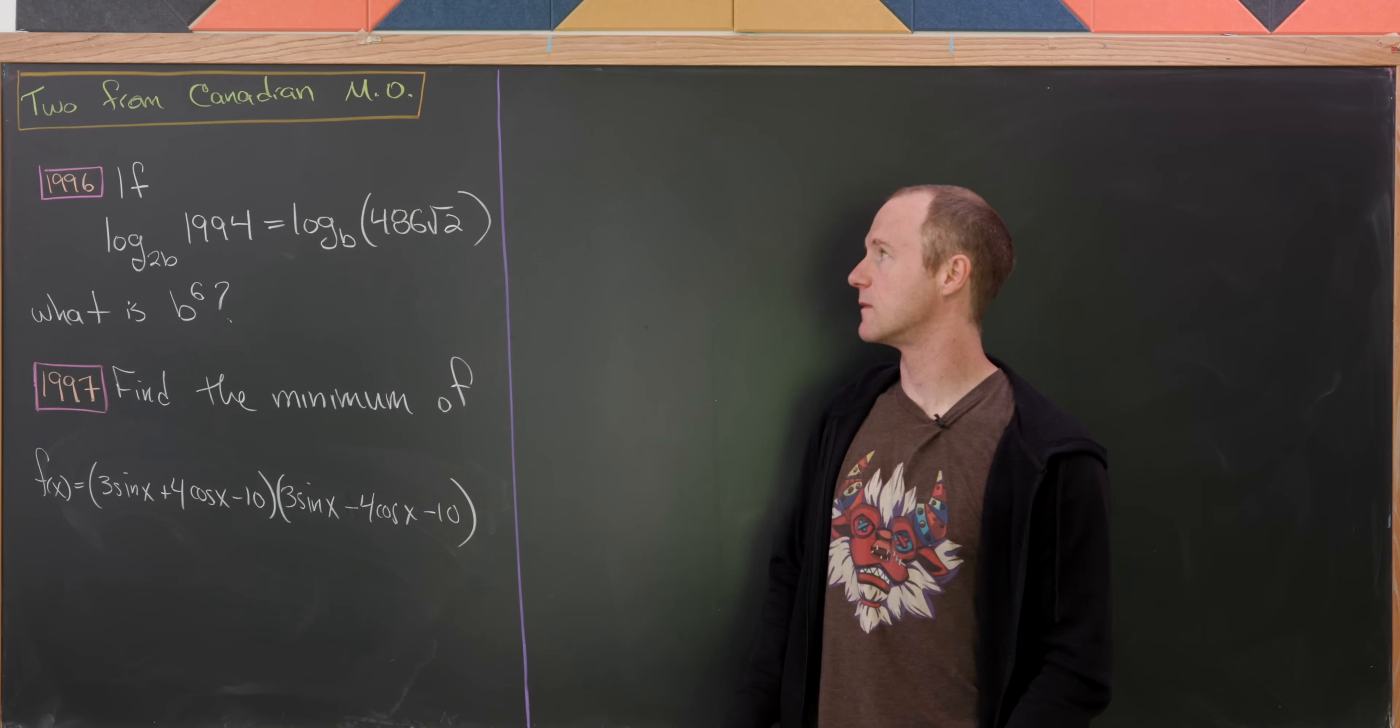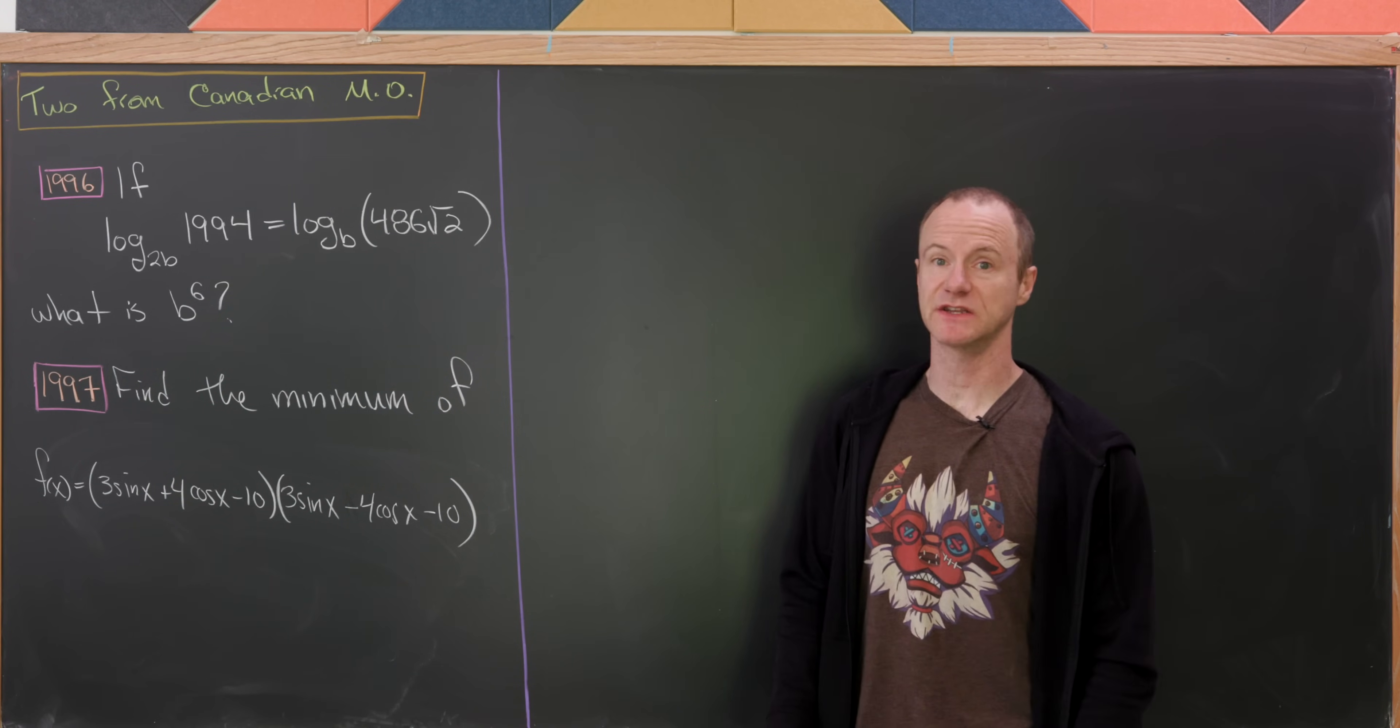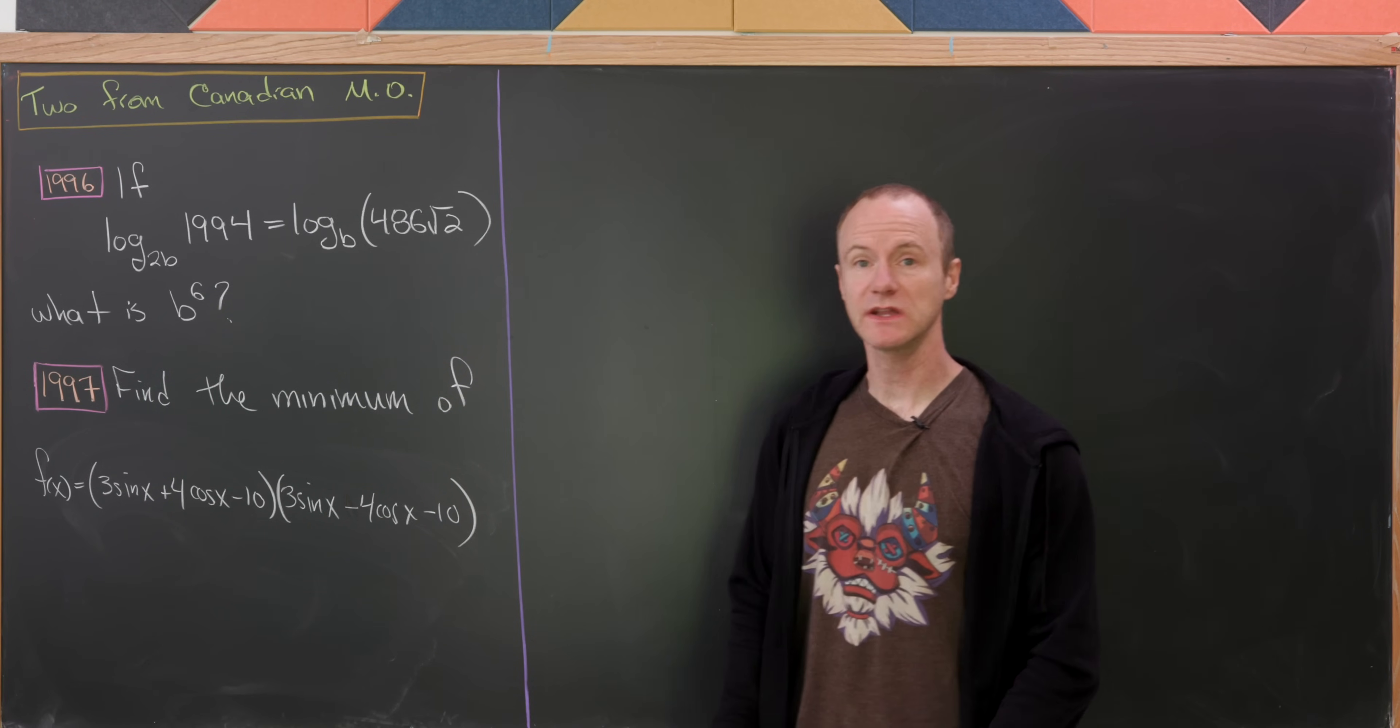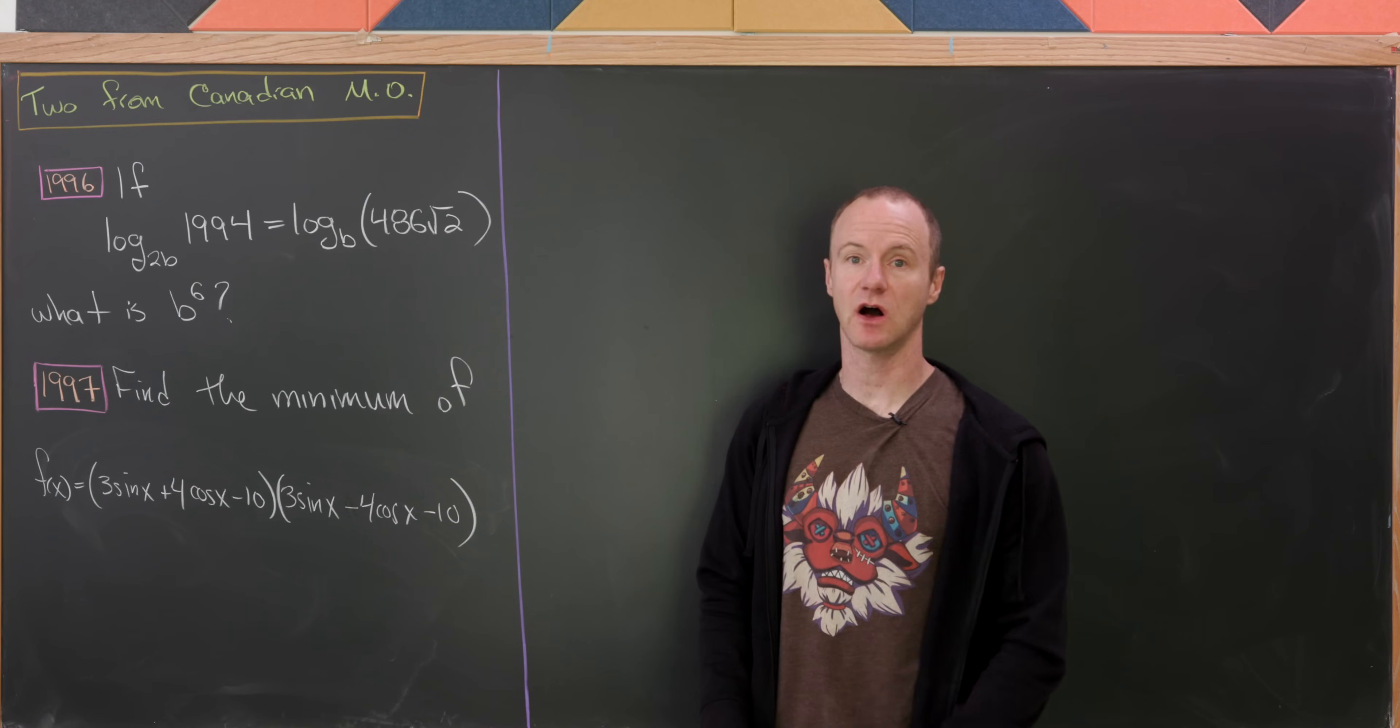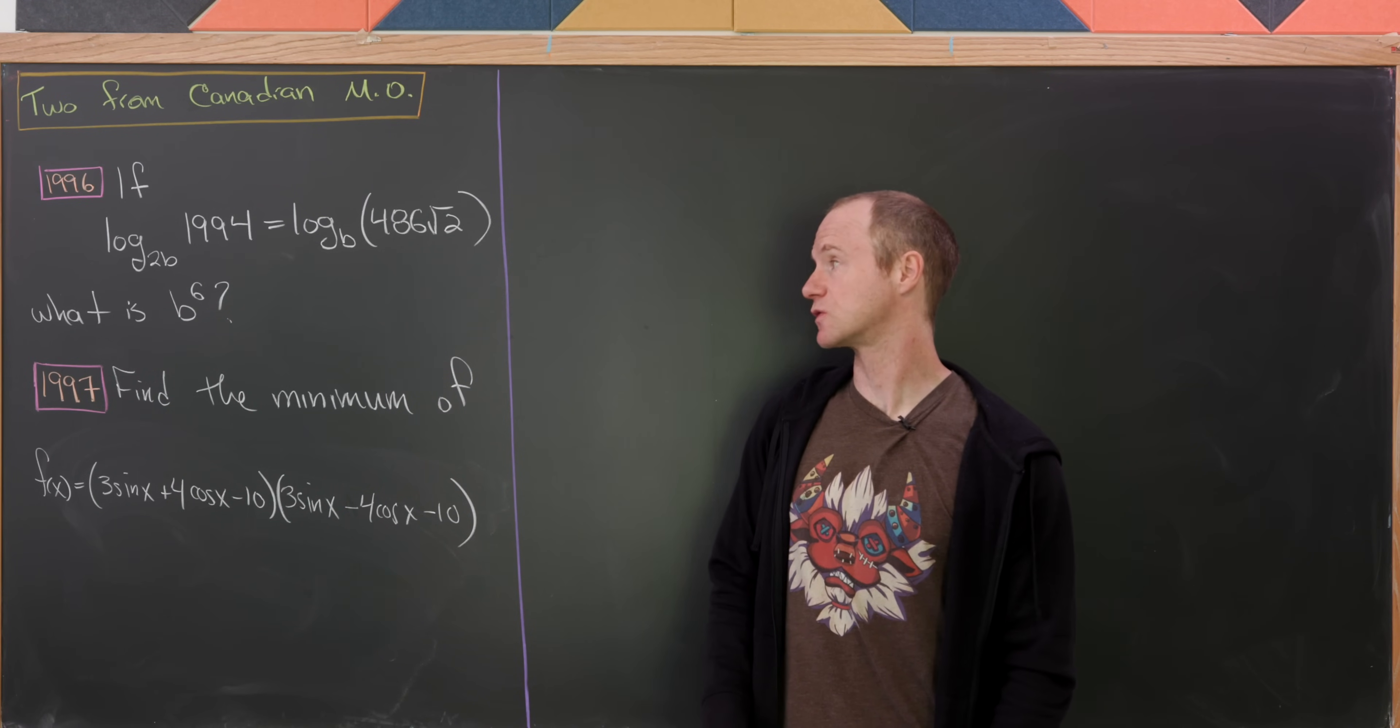Today we've got two nice problems from Canadian Math Olympiads. The first we'll look at is from 1996, and it's a nice problem involving the logarithm. Let's suppose that the log base 2b of 1994 is equal to the log base b of 486 times the square root of 2.